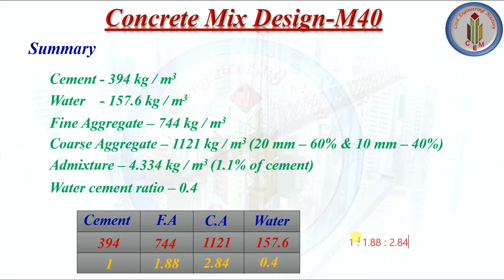This is the mix ratio for M40 grade concrete for Very Severe exposure condition — 1 part cement : 1.88 parts fine aggregate : 2.84 parts coarse aggregate, with water cement ratio 0.4. I hope you liked this video. Please comment below, and don't forget to subscribe for more videos.